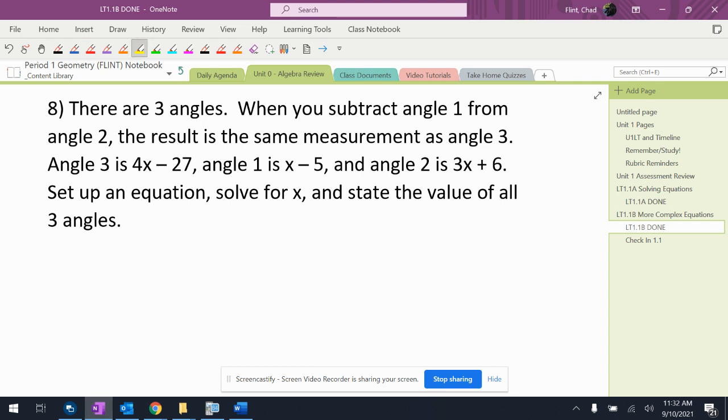So it says there's three angles. When you subtract angle one from angle two, the result is the same as angle three. So I'm going to color code those three. Angle three, which is blue, is that one. Angle two is green, is that one. And angle one is yellow, is that one. This gives me the words right here.